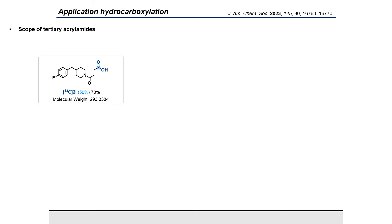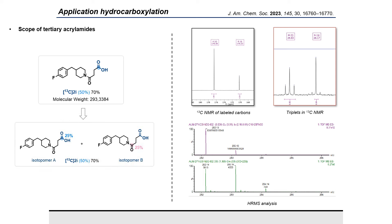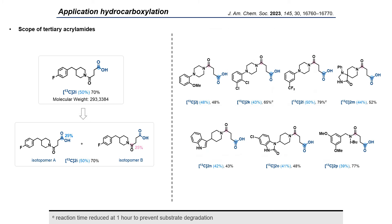Surprisingly, when N,N-disubstituted acrylamides were engaged in our conditions, we always isolated the final product as a mixture of two isotopomers. This can be easily seen in carbon NMR and also in HRMS. We hypothesized that this phenomenon was going through a succinic anhydride intermediate. However, we never managed to observe this intermediate.